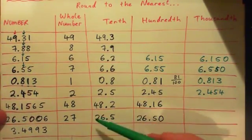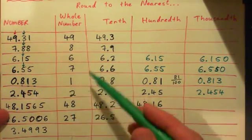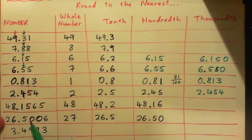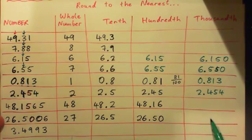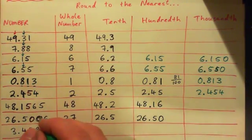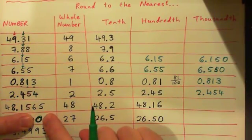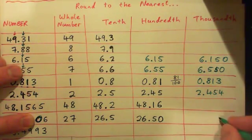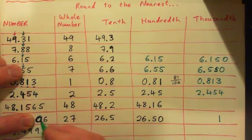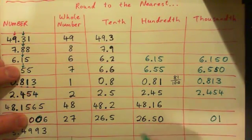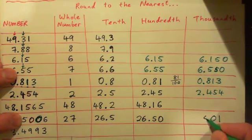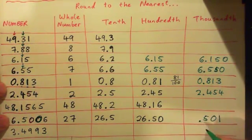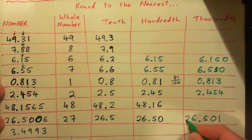We can go back and do one or two as well if you want. So anyway — 26.5006 rounded to the nearest thousandth. The thousandth spot is this zero here. And after that zero is a six. If it's five or more, I've got to round that up to a one. That becomes one, then I fill in the rest: zero, five, decimal point, six, two. That's the answer.